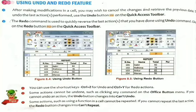First, after making a modification in a cell, you may wish to cancel the changes and retrieve the previous data. To undo the last actions performed, use the undo button on the quick access toolbar.